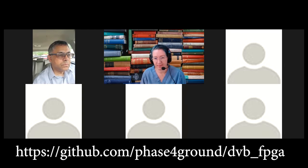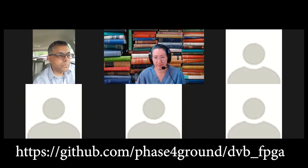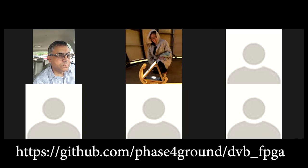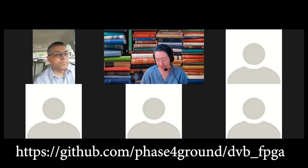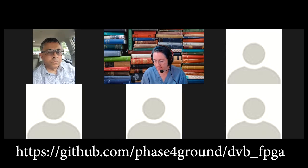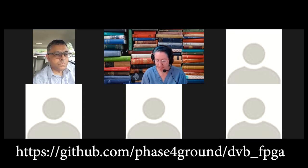There is a ZC706 folder inside build Vivado. Basically run the script and it should implement. I need to find a place to put the instructions for how to program, how to run, how to do this kind of stuff, and a place to put the Python scripts.